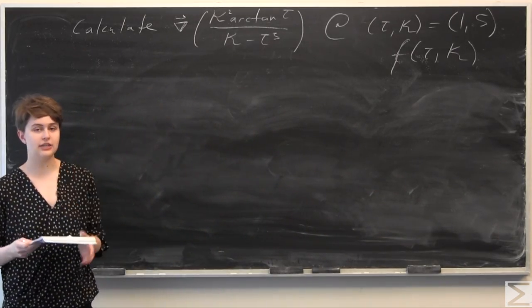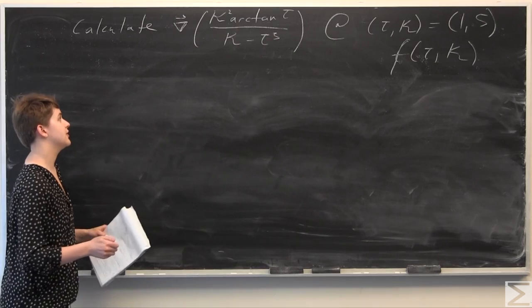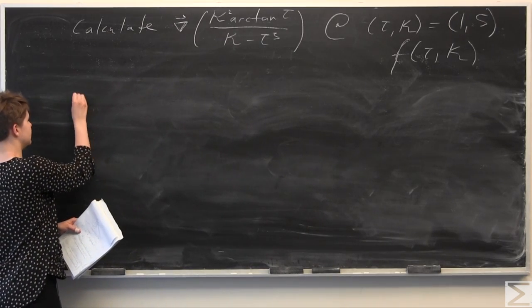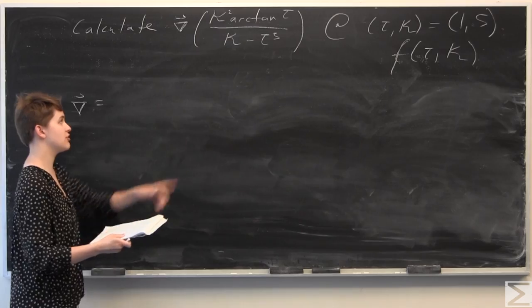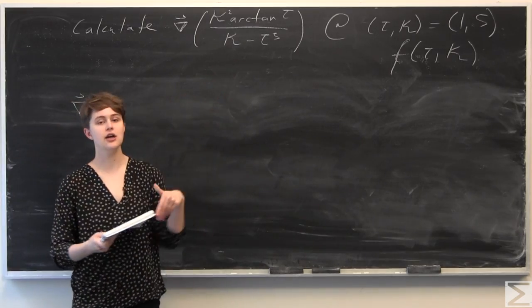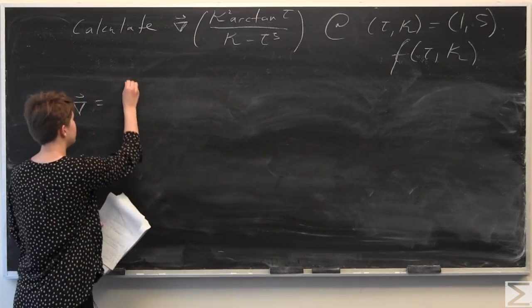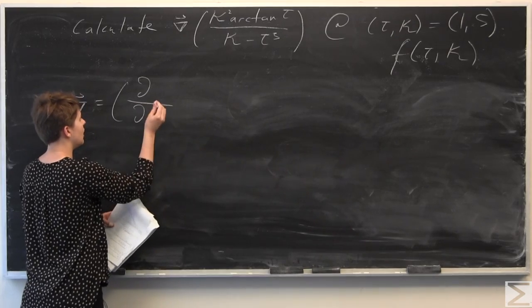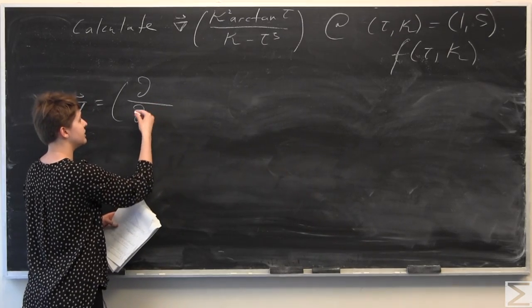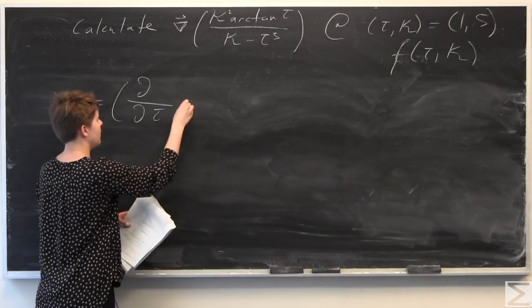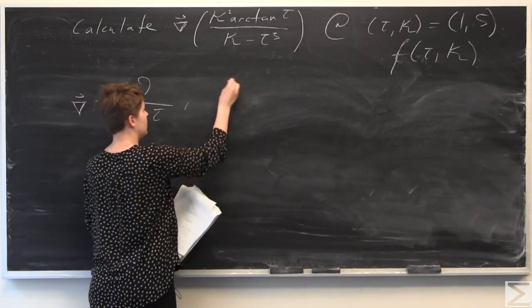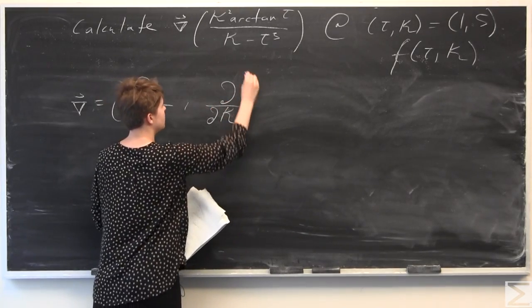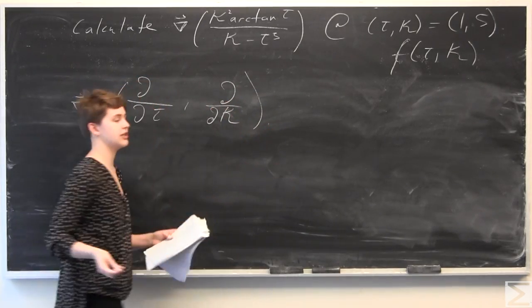We're going to go ahead and calculate the gradient vector first. The gradient — I'll simplify this notation — is going to be equal to the partial of the function with respect to tau, and then the partial of the function with respect to kappa, just for clarity's sake.